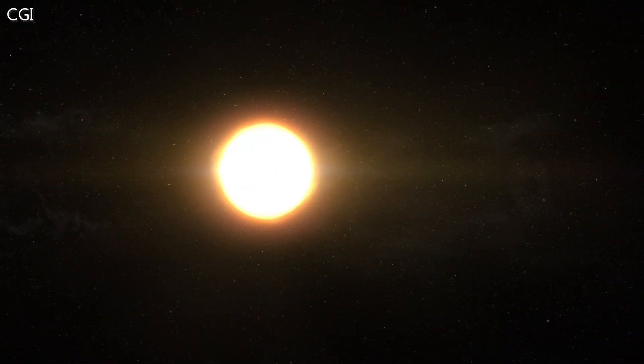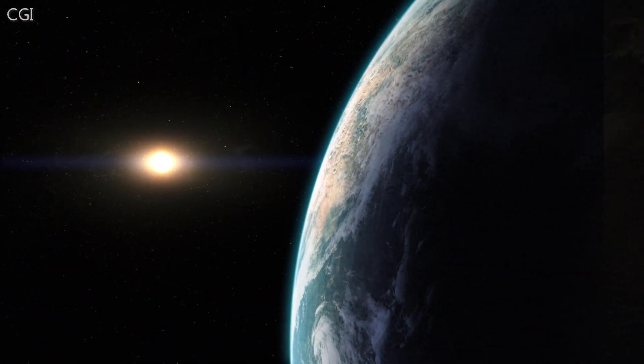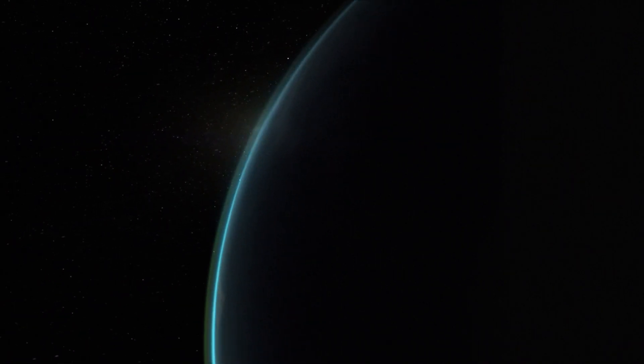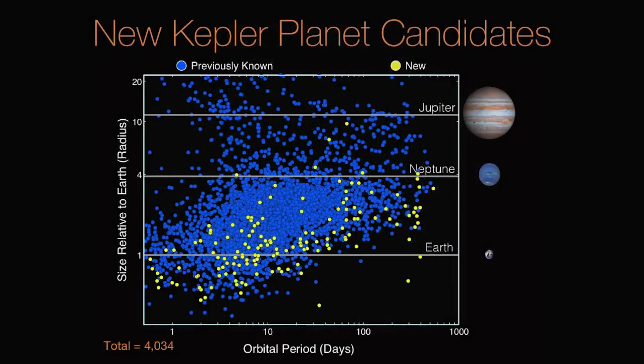Inhabited planets could have telltale signs of life, like smog and pollution, which would be seen in the planet's spectrum. So, have any exoplanets like these been found?